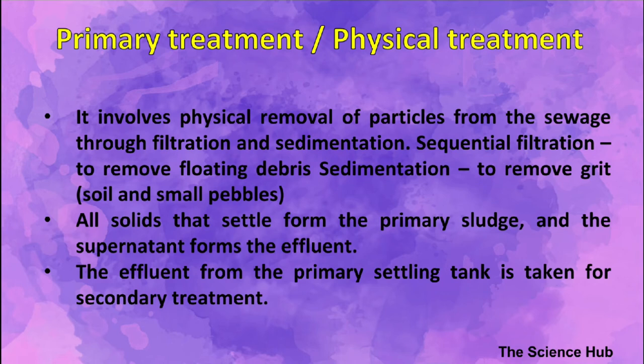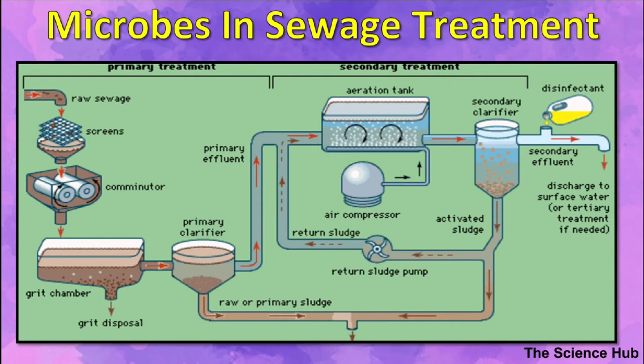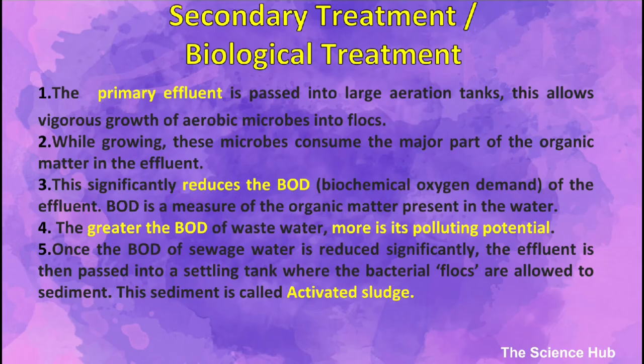The effluent from the primary settling tank is taken for secondary treatment. In the diagram you can see how the primary and secondary treatment processes occur. Secondary or biological treatment involves passing of primary effluents into large aeration tanks to help the growth of aerobic microbes into flocs. Flocs are masses of bacteria associated with fungal filaments forming a mesh-like structure. These microbes increase the consumption of organic waste and decrease the BOD — biological oxygen demand — of the effluents.